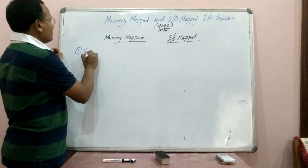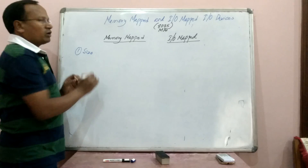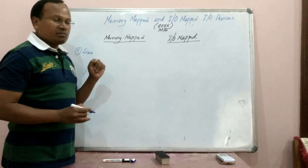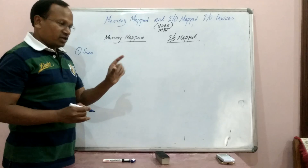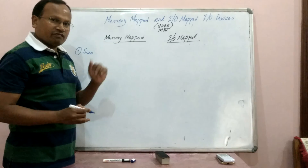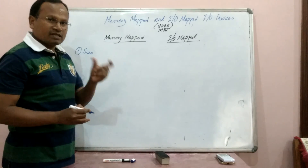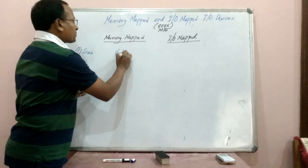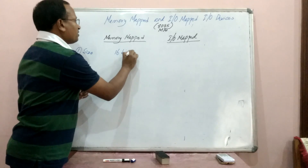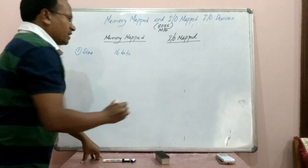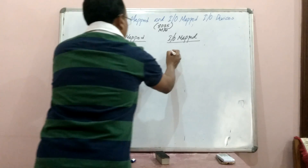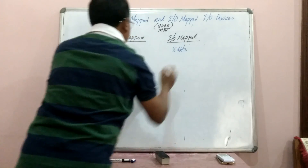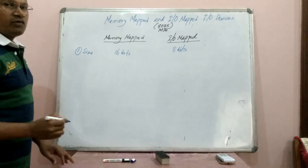The first point is size. What will be the size of memory-mapped IO devices? As the name suggests, the memory address of the 8085 microprocessor is 16-bit, so the size of memory-mapped IO will be 16-bit. The size of IO-mapped devices will be 8-bit.